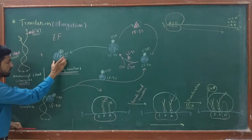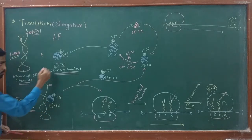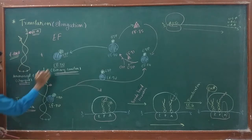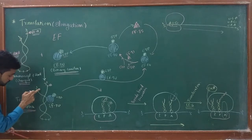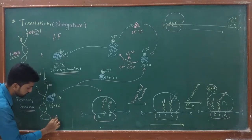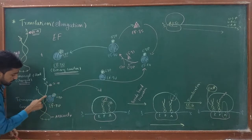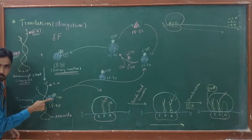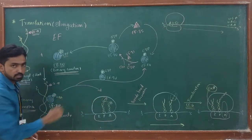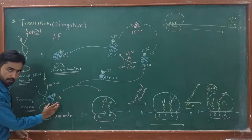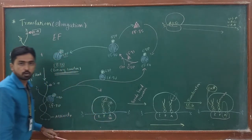When EF-TU-GTP combines with a tRNA, it forms the ternary complex. The binary complex converts into the ternary complex when the translation factor gets associated with the tRNA. Here the tRNA is shown with an anticodon loop, and the tRNA carrying amino acids is now attached with the EF-TU-GTP complex — this is the ternary complex. This tRNA is now ready to enter the elongation process. This factor plays the important role of transferring tRNA to the A site of the ribosome.